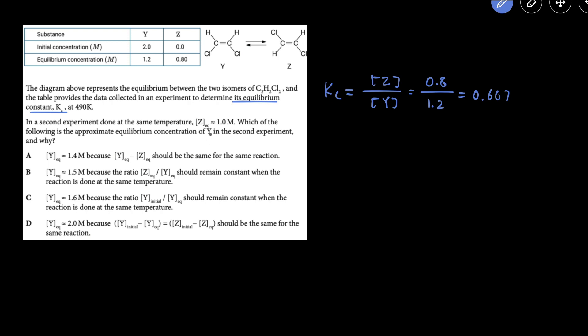Then we're told that we're running a second experiment, this time the equilibrium concentration of Z is 1 and it's done at the same temperature. That's very important because if the temperature is the same the K value will be the same. So we can just copy and paste this, change the Kc into 0.667, the same Kc as the previous experiment because the temperature is the same. We know that the equilibrium concentration Z is 1 so change that to 1 and then we would just do algebra to solve for Y.